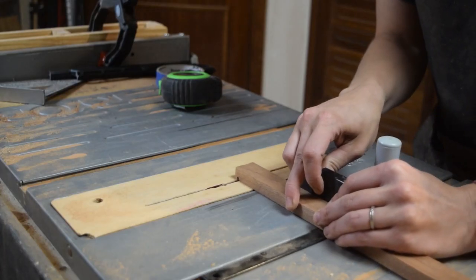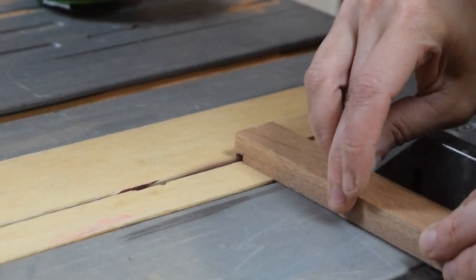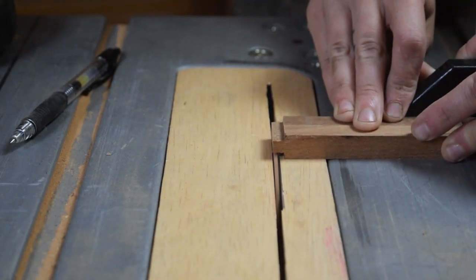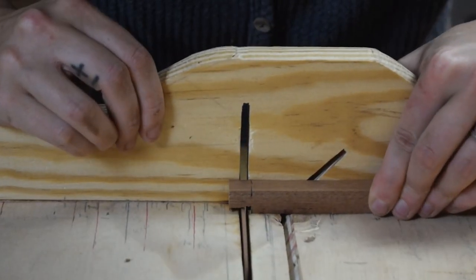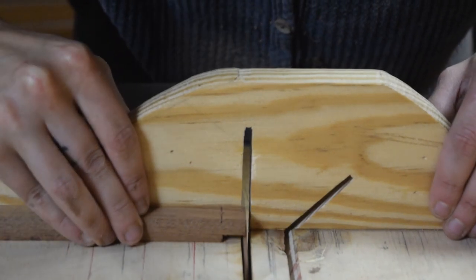Using the table saw and the miter gauge, I cut out the tenons for the base connection. Then, switched to the cross-cut sled to cut the reliefs for the bridle joints.